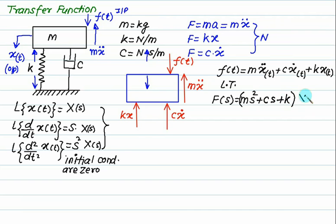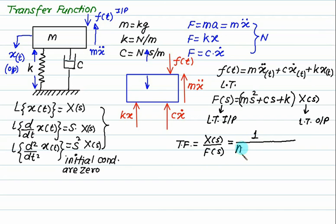Taking Laplace, the Laplace transform of the output and the Laplace transform of the input. X(s) equals one upon m s square plus c s plus k.